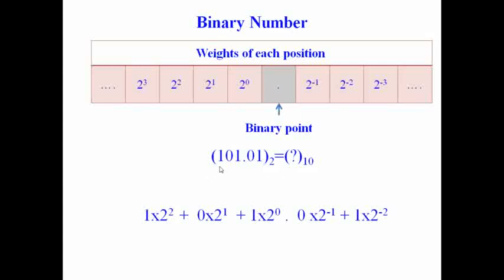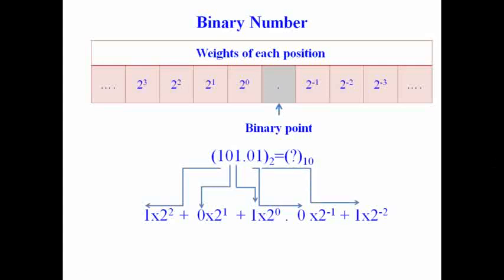Now let's take the binary number 101.01 and calculate its equivalent decimal. The first 1 is 1 × 2 raised to the power 2. The 0 is multiplied by 2 raised to the power 1. The next 1 is multiplied by 2 raised to the power 0. After the binary point, the 0 is multiplied by 2 raised to the power minus 1, and the last 1 is multiplied by 2 raised to the power minus 2. Adding these: 4 + 1 = 5, and 0.25 — so the decimal number is 5.25 (base 10).